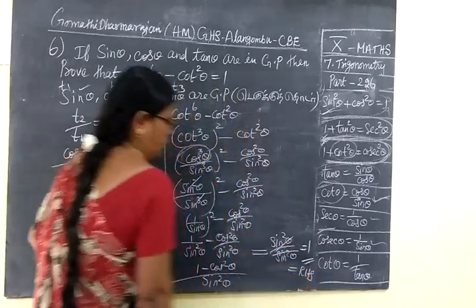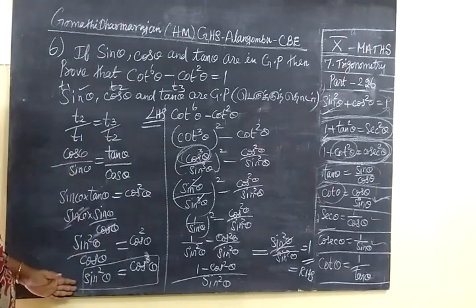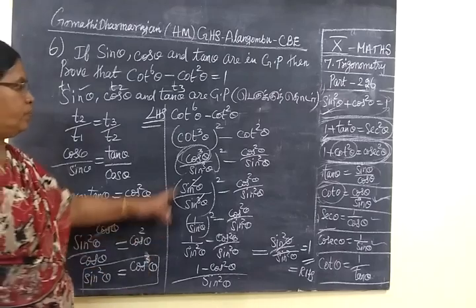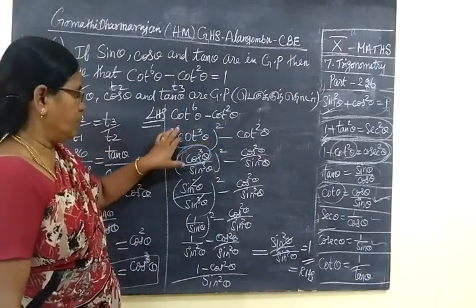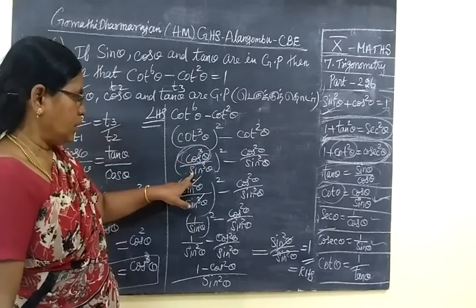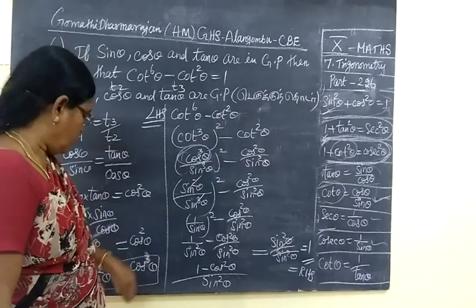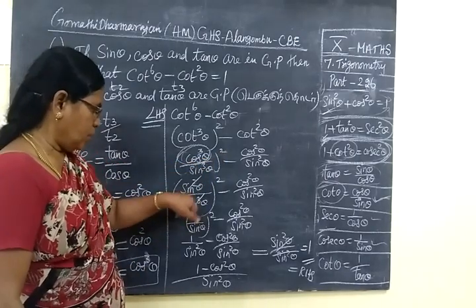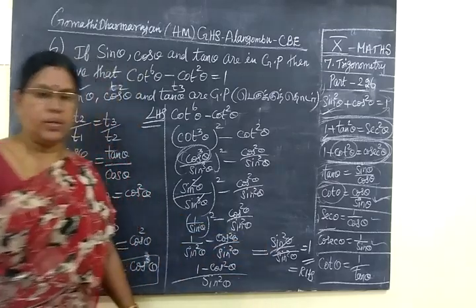So equal to RHS. So this is very simple sum. 1 by sin square and this is equal to RHS. Thank you.